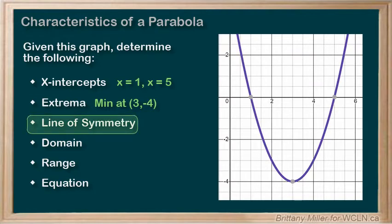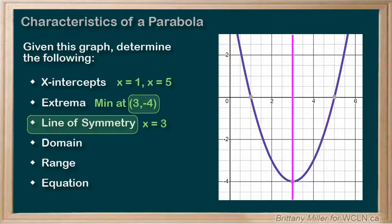The line of symmetry, which would cut the parabola into two equal halves, always occurs at the x value of the vertex. So the line of symmetry is x equals 3.